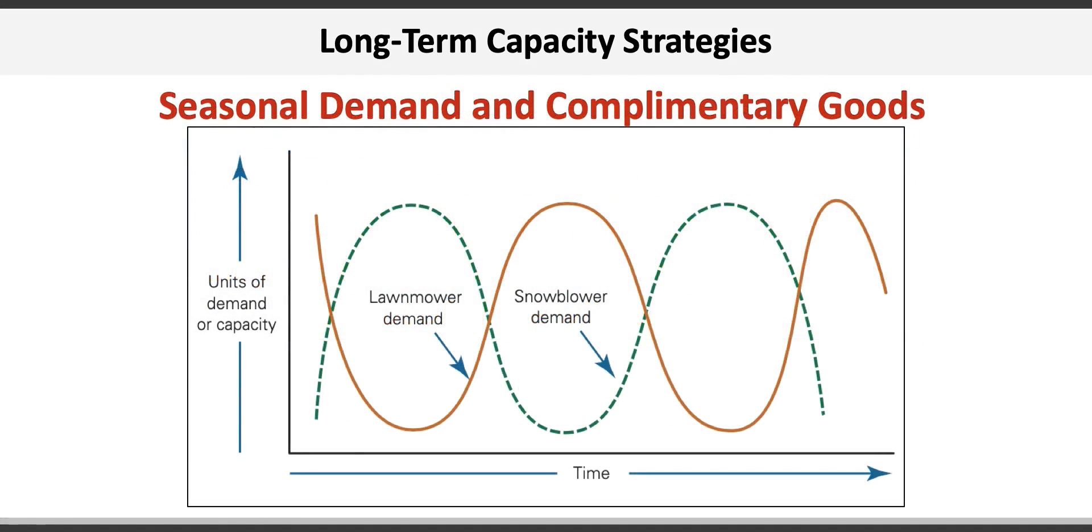When demand for lawnmowers, the orange line, hits its peak in late summer and is expected to start declining, there's no point in making more lawnmowers. But Honda knows that snowblower demand will start increasing, so they would produce snowblowers.